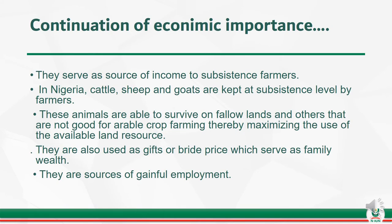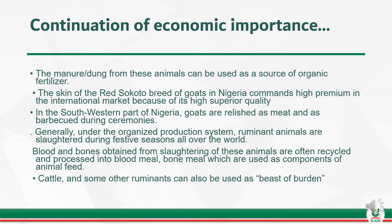They also serve as sources of income to subsistence farmers. In Nigeria, cattle, sheep, and goats are kept at subsistence level by farmers. These animals are able to survive on fallow lands and others that are not good for arable crop farming, thereby maximizing the use of available land resources. They are also used as gifts or bride price which serve as family wealth, and they are sources of gainful employment. The skin of the Red Sokoto breed of goats in Nigeria commands a high premium in the international market because of its superior quality. In the southwestern part of Nigeria, goats are relished as meat and as barbecue during ceremonies.